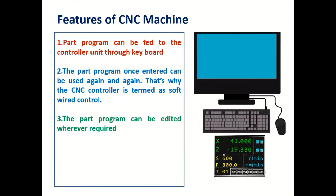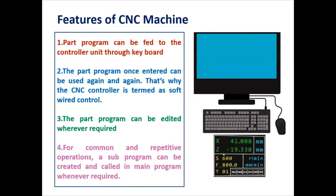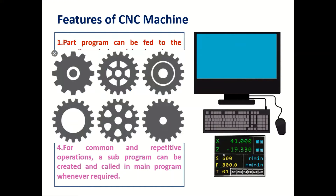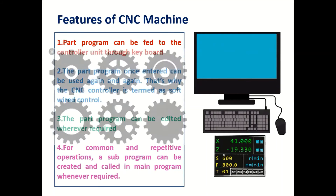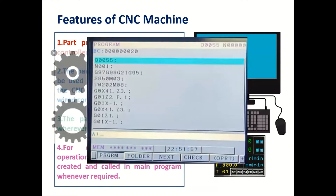The third feature is that part programs can be edited whenever required. If you are writing the program on the computer screen, you can easily edit it. The fourth feature is that for common and repetitive operations, a sub-program can be created and called in a main program whenever required. Since the same operations may be performed on other jobs, the sub-program already stored in memory can be reused in the main program using a G code command, saving writing time.